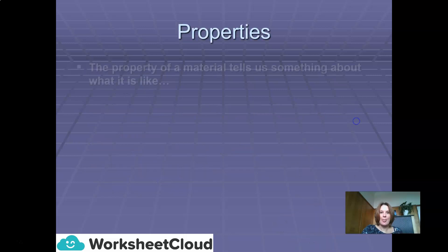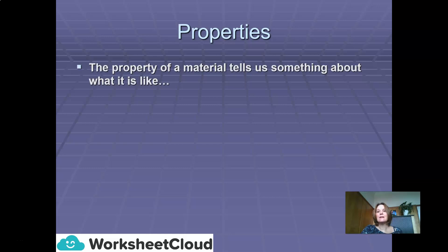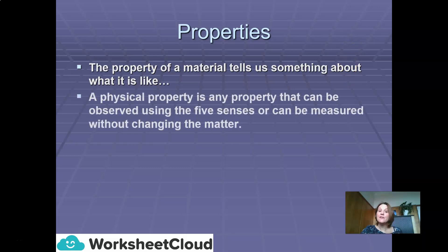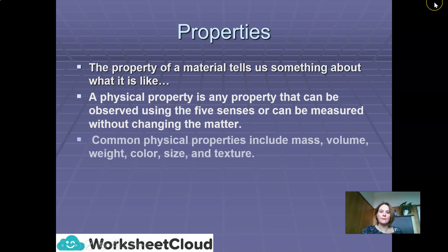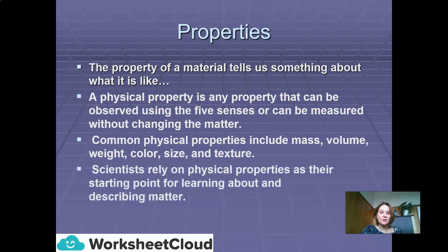Properties. The property of a material tells us something about what it is like. A physical property is any property that can be observed using the five senses, like sight, smell, touch, or can be measured without changing the matter. Common physical properties include mass, volume, weight, color, size and texture. Scientists rely on physical properties as their starting point for learning about and describing matter.